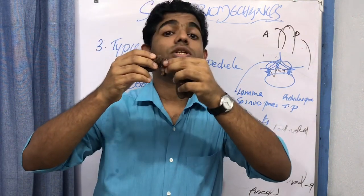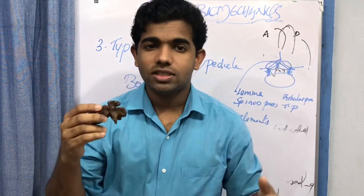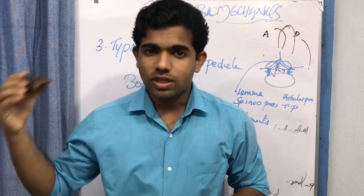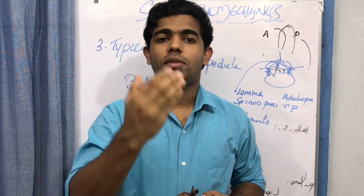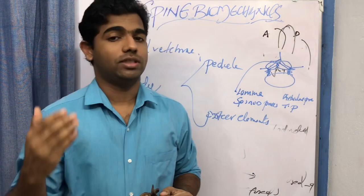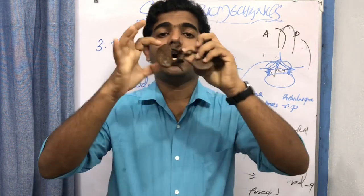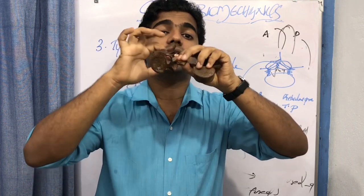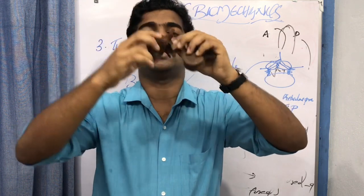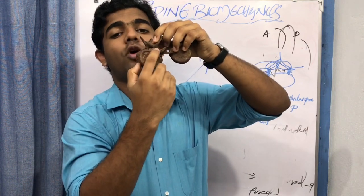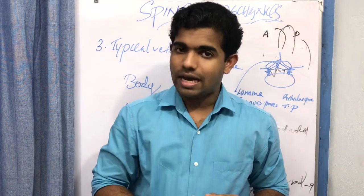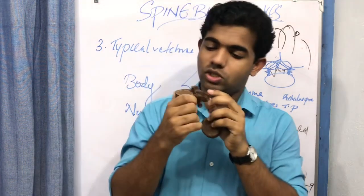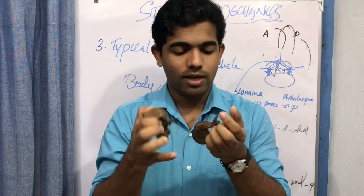The spinous process projects posteriorly from the lamina. The orientation of the spinous process differs between regions of the vertebral column, which will be covered region by region later. The lamina also forms the roof of the vertebral canal, through which the spinal cord passes.